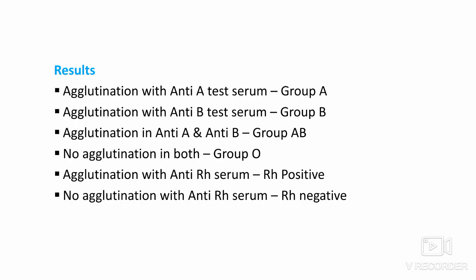If there is agglutination in both anti-A and anti-B, that is group AB. If there is no agglutination in both, that is group O. Also, if there is agglutination with anti-RH serum, that is RH positive; and if there is no agglutination with anti-RH serum, that is considered RH negative.